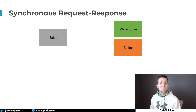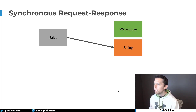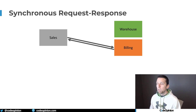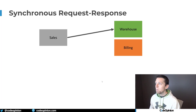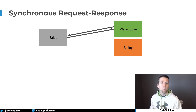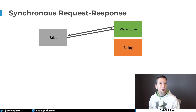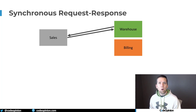This gets much more complicated when making synchronous calls to many different services. In my example, we have sales, warehouse, and billing. When we place an order, we first reach out to billing to create an invoice or charge our customer — synchronously, so we know it completed. Then we make another synchronous call to the warehouse to create a shipping label. One of the issues here is temporal coupling. We don't have a distributed transaction, so if the call to billing succeeds but the warehouse is unavailable or times out, we're left in an inconsistent state.